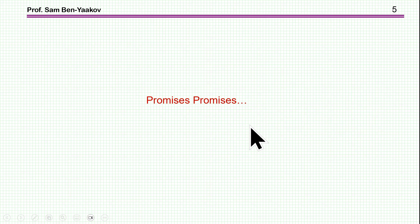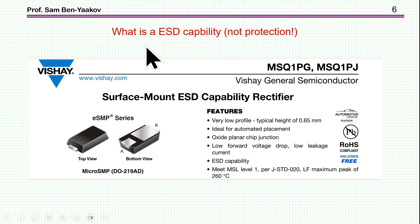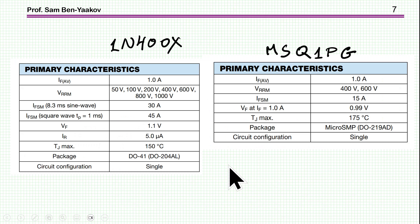The reality is a bit different. So let's have a look first, what is the ESD-capability or capable rectifier? It's not protection, it is the ESD-capable. And here it says that ESD-capability rectifier. So we see that this is a diode, a rectifier, and it says here that it has an ESD-capability.